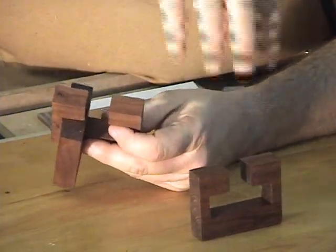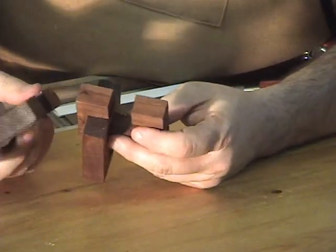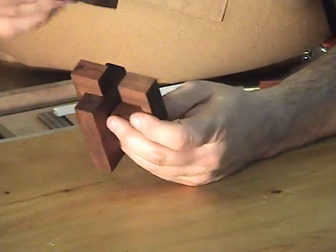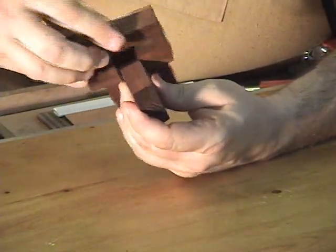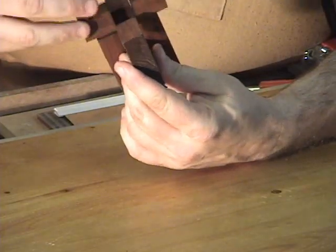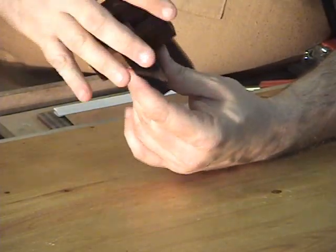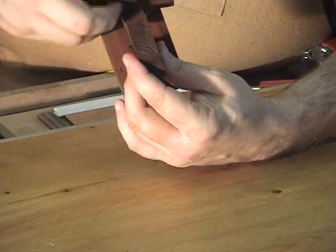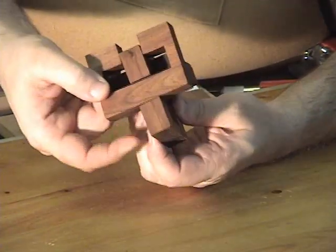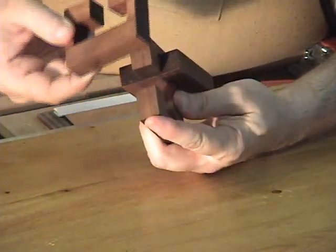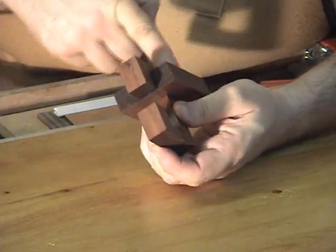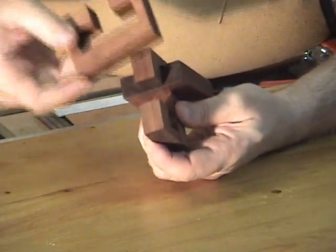Then you take the other piece of the C and again, you're wanting to get a piece that's offset from it. So go ahead and put it in like this to where the opening of this C you're putting in is going to match up with this cross member right here.